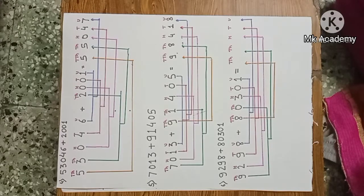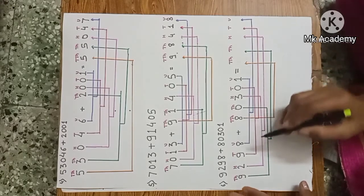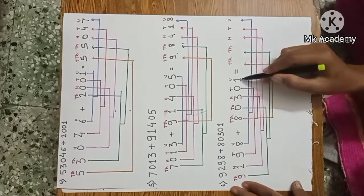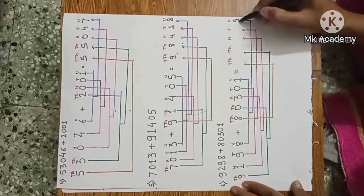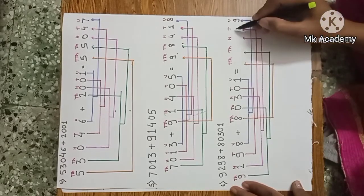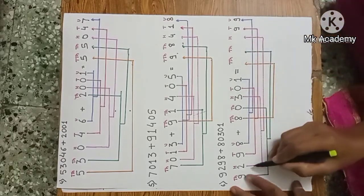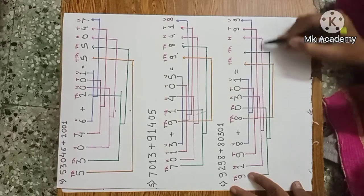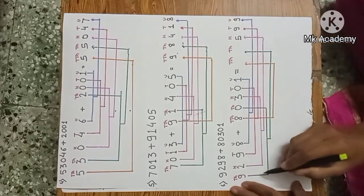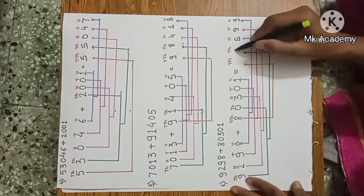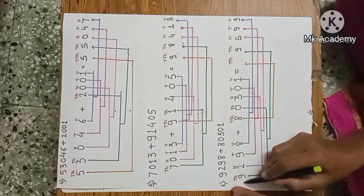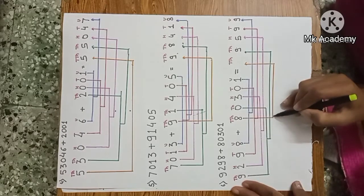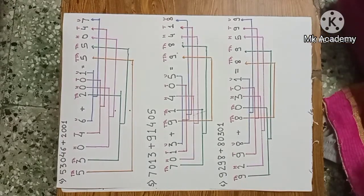Sixth example: 9,298 plus 80,301. Start from unit place: 8 units plus 1 unit is 9. Tens: 9 tens plus 0 tens is 9. Hundreds: 200 plus 300 is 500. Thousands: 9,000 plus 0,000 is 9,000. Ten-thousands: here is nothing for the first number, so write down 8 as it is. The answer is 89,599.